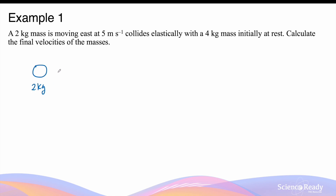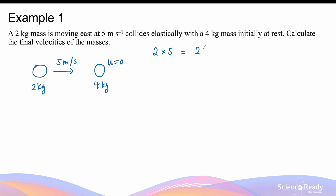So we have a 2 kg mass initially moving to the east at 5 m/s, and this will eventually collide with another mass that weighs 4 kg with an initial velocity of 0 m/s. Before considering whether this is elastic or inelastic, we can apply the law of conservation of momentum. The total momentum of the system — 2 kg multiplied by 5 m/s — equals the total momentum of the two masses after the collision: the mass of the first object times its final velocity v1 plus the mass of the second object, 4 kg, multiplied by its velocity v2.